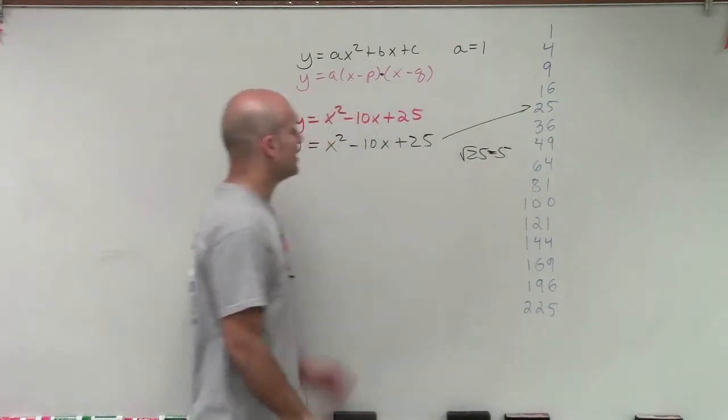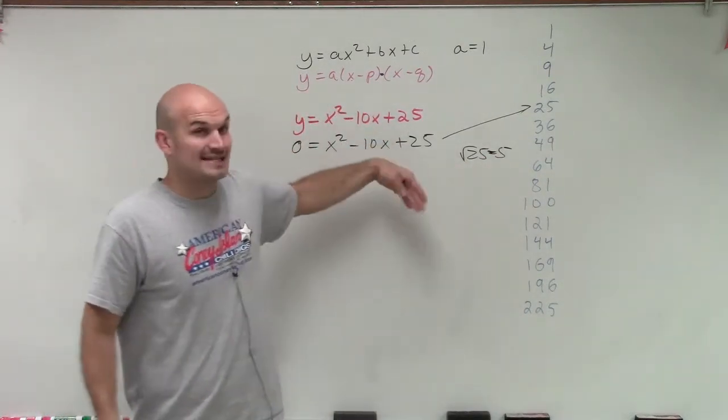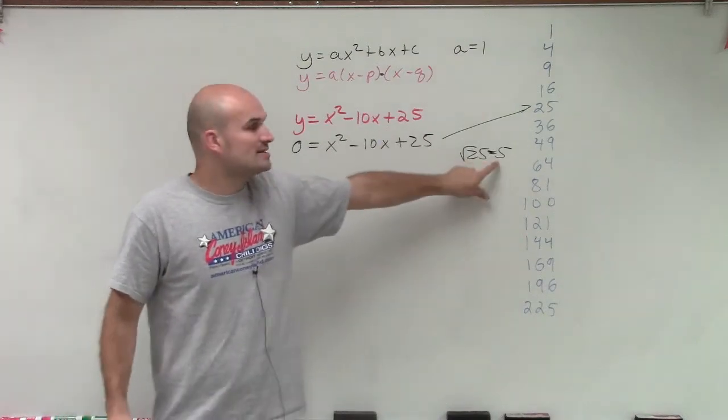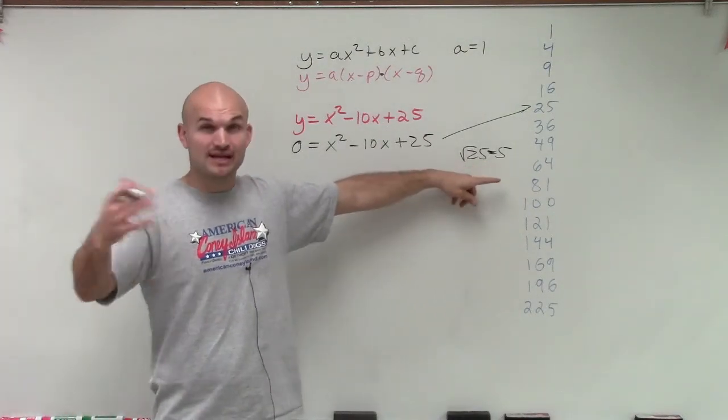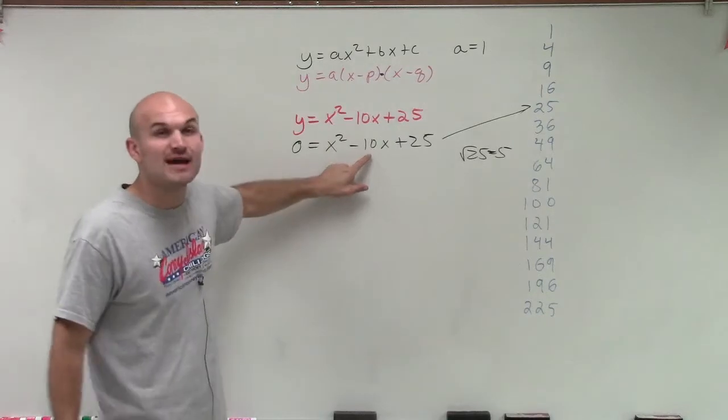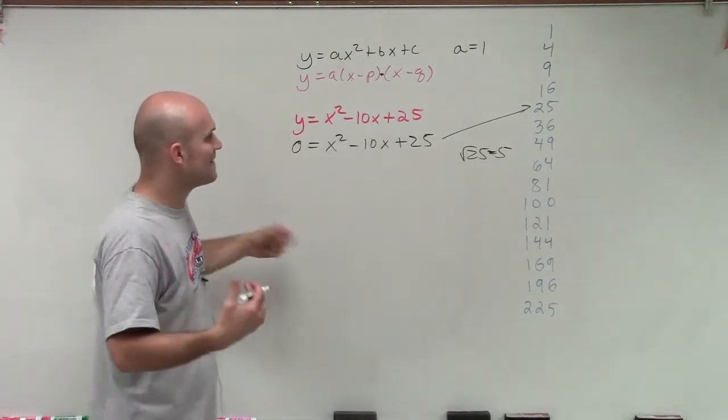Now I want to see, is my middle term double that, either positive or negative? So double 5 is 10, and remember it can be positive or negative. Well yes, we have a negative 10, so therefore,